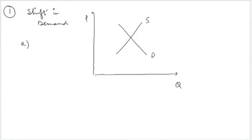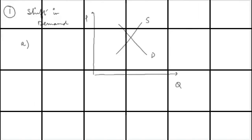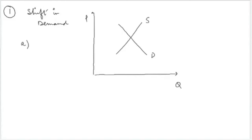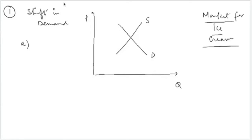The first example is the change in market equilibrium due to a shift in the demand curve. We are taking the market for ice cream as our scenario. Suppose the weather becomes hot — what will be the effect on the ice cream market? We will follow three simple steps to understand how market equilibrium changes and how a new equilibrium gets established.